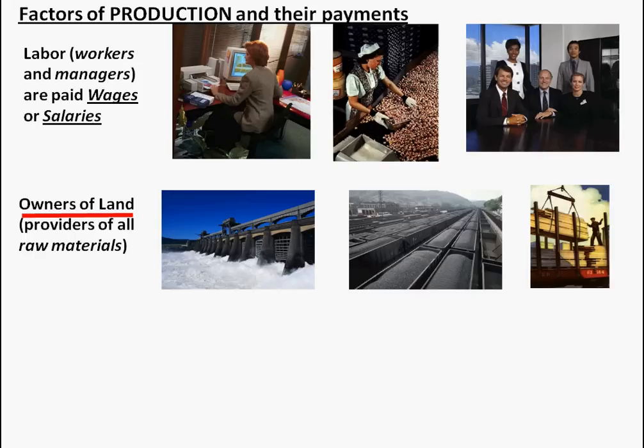All production requires raw materials — it doesn't matter what we make — and ultimately all those raw materials come from the ground. Whether it's plastics made from petroleum products, something made from wood from trees, metals from ore, or water and other chemicals. All those raw materials come from the ground, and that ground is owned by somebody, and we pay the owners of land for their raw materials. In economic terms, we say we pay them rent.